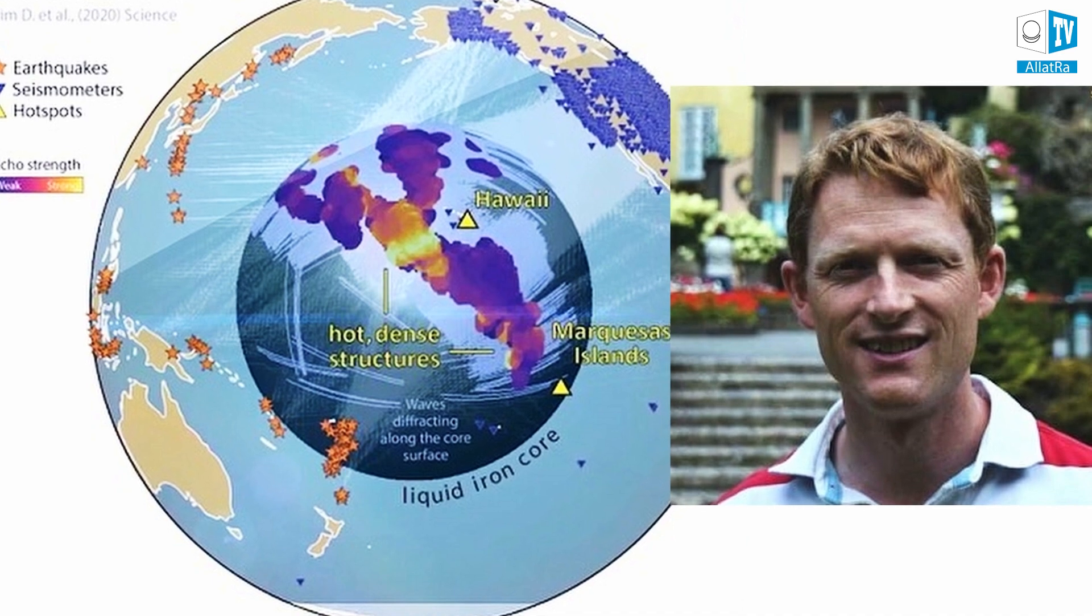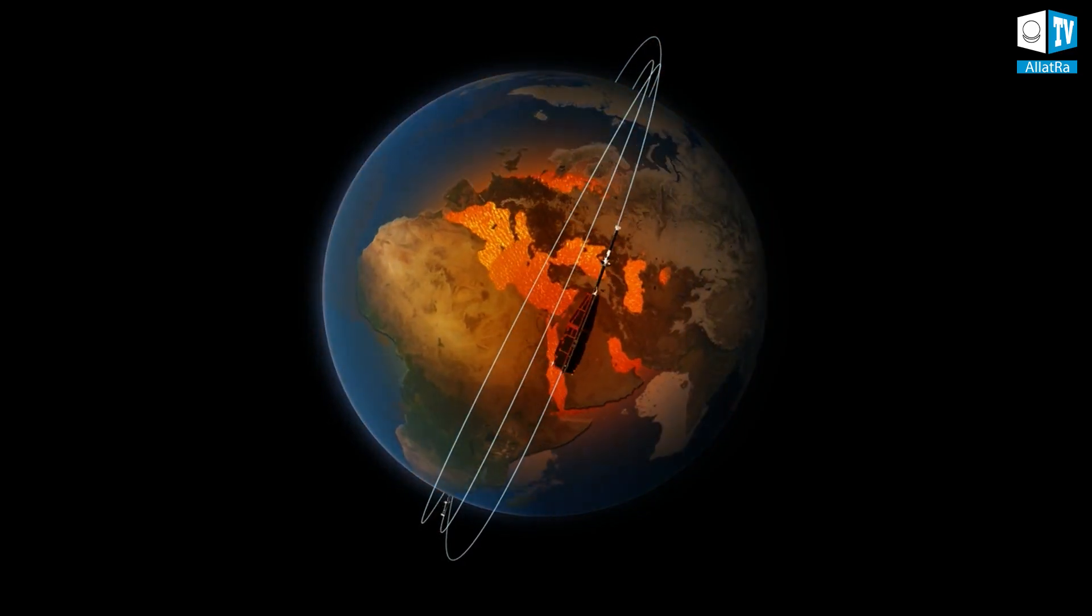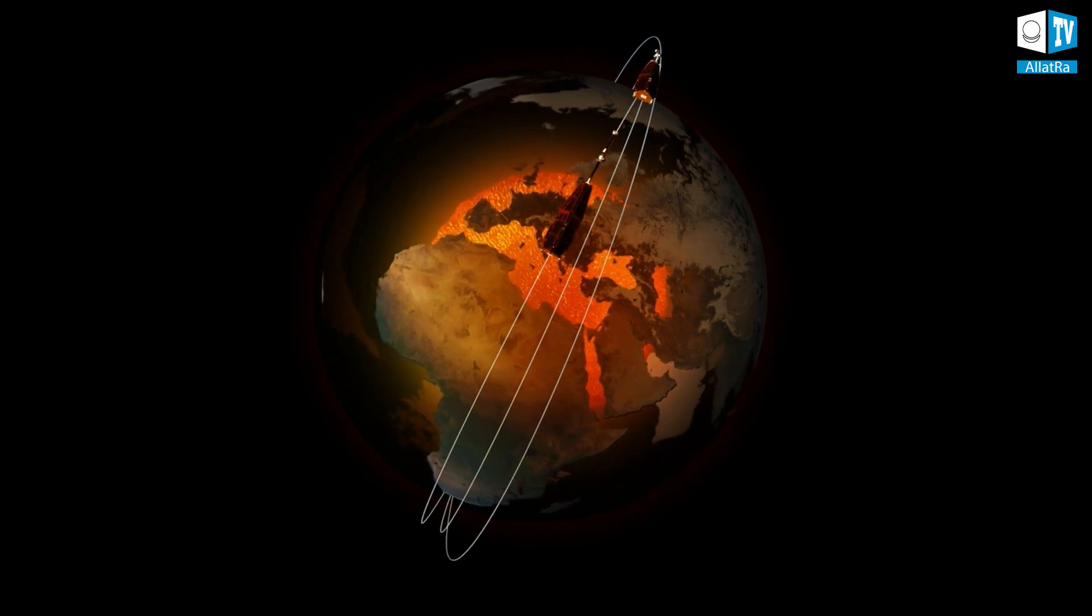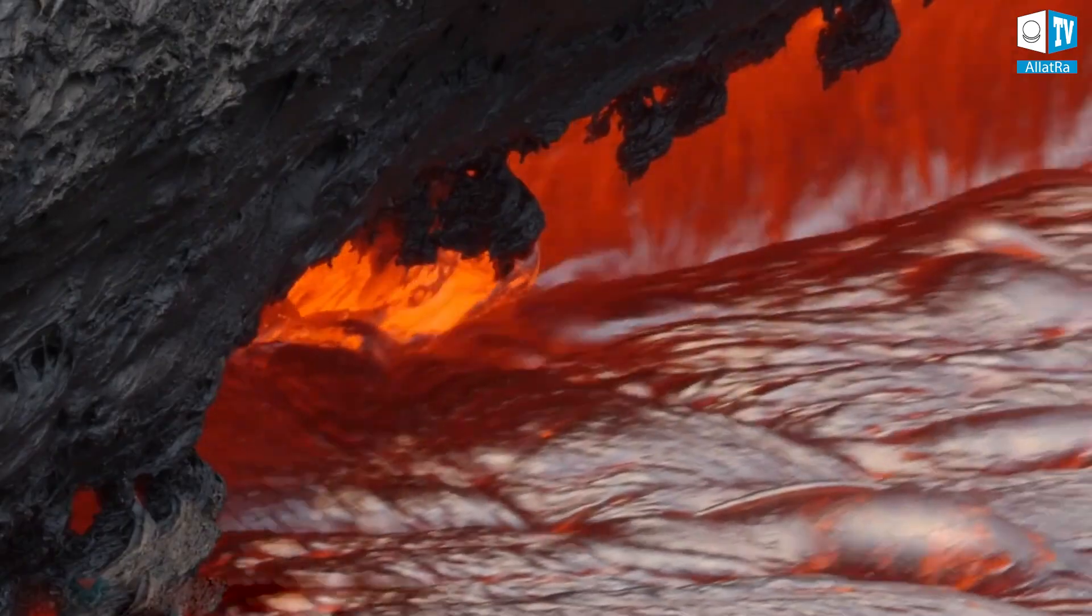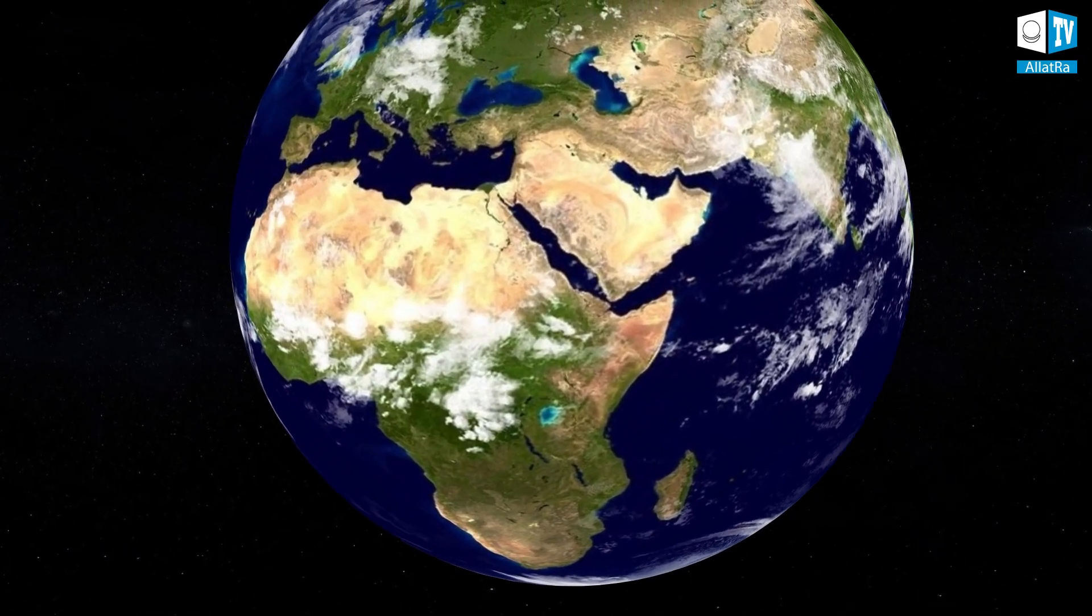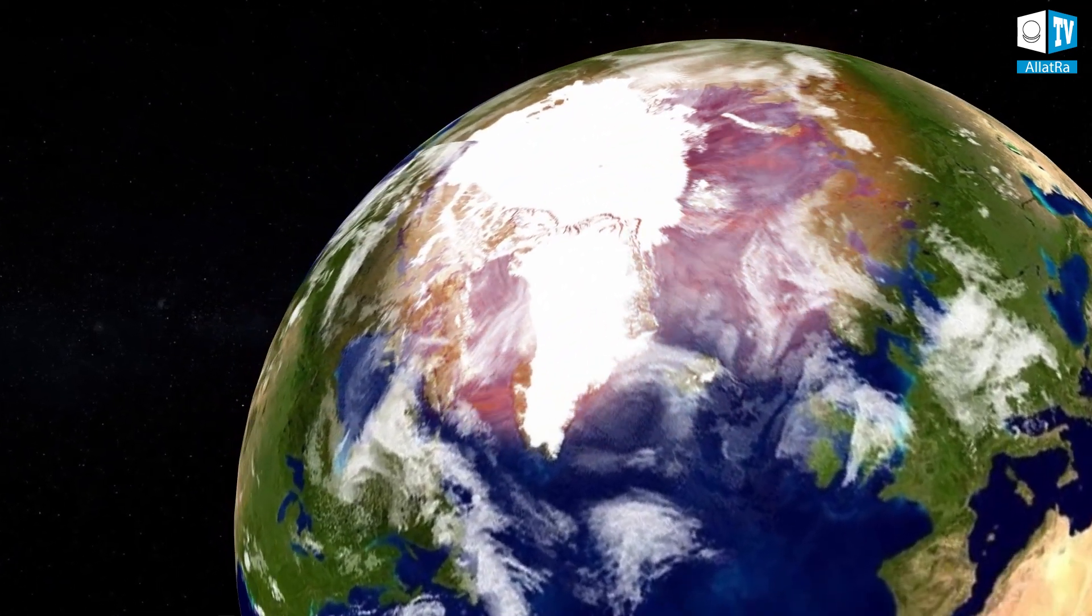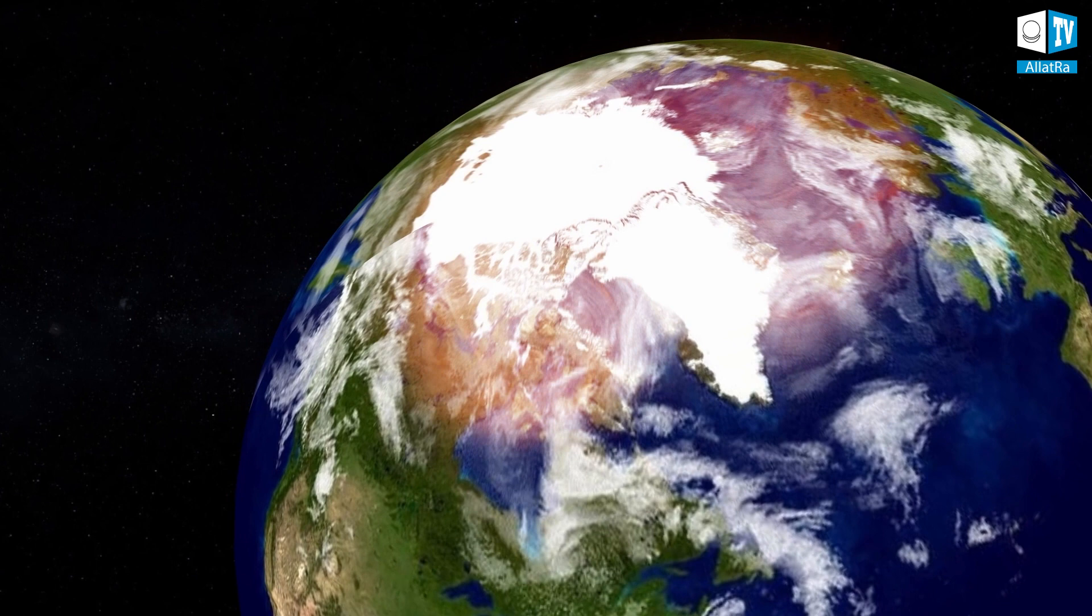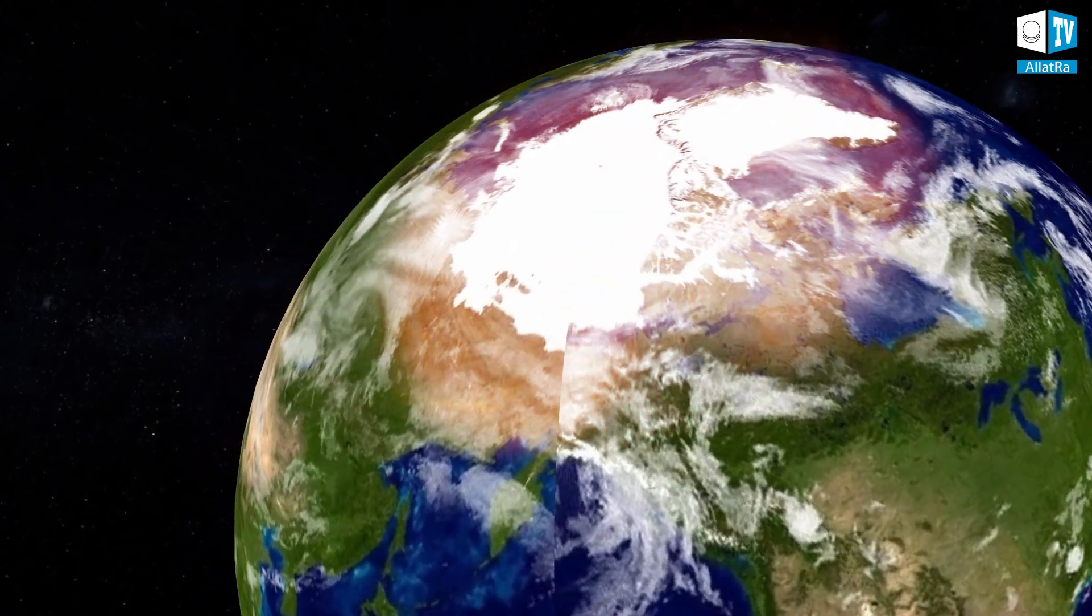Phil Livermore, an associate professor at the University of Leeds, was surprised when a trial of swarm satellites detected signs of a fast-flowing river of melted metal in the Earth's outer core. Researchers indicated that this jet stream is moving from Canada to Siberia and now wraps halfway around the planet.